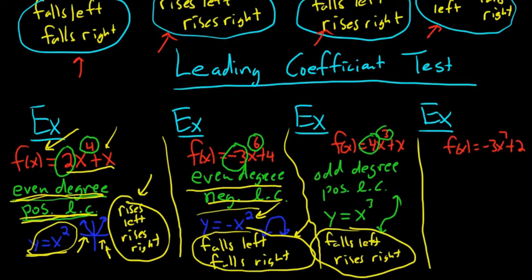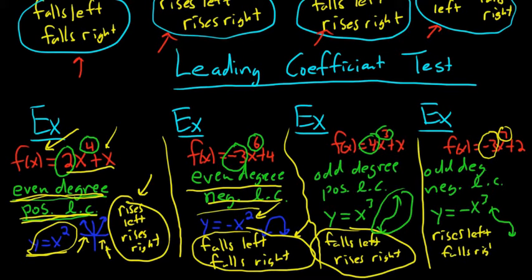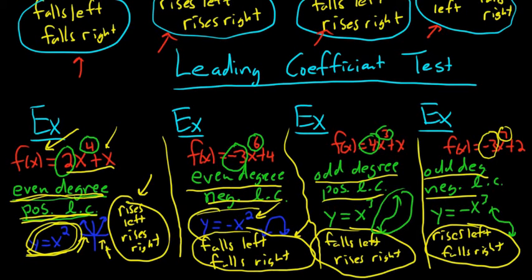The last case: f(x) = -3x⁷ + 2 has odd degree and negative leading coefficient. The simplest function here is y = -x³, which is x³ flipped. It rises left and falls right. So those are all four possible cases. If you just memorize what x², -x², x³, and -x³ look like, you can answer all of these questions.